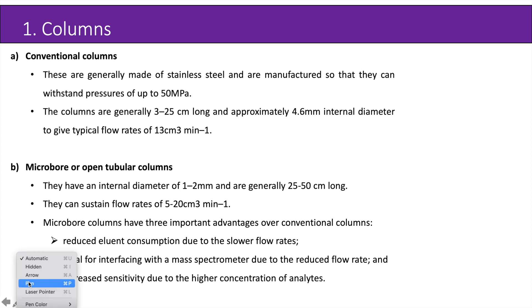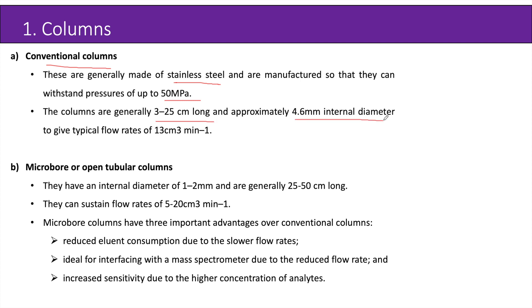Two different types of columns are majorly used for HPLC. First are conventional columns, generally made of stainless steel and manufactured to withstand pressures up to 50 MPa. The columns are generally 3–25 cm long and approximately 4.6 mm internal diameter, giving typical flow rates of 1–3 cm³ per minute. The second type is micro-bore or open tubular columns, with an internal diameter of 1–2 mm and generally 25–50 cm long, sustaining flow rates of 5–20 cm³ per minute.